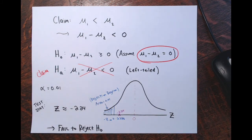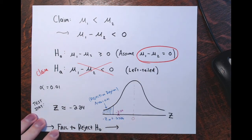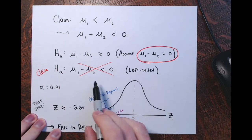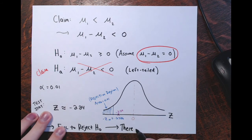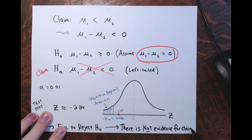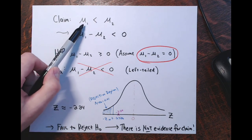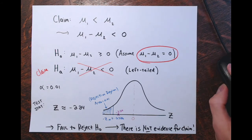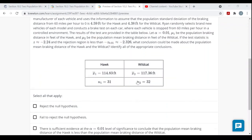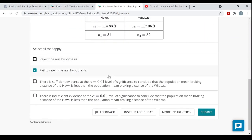Since we fail to reject the null hypothesis, the conclusion is that there is insufficient evidence to support the claim. Specifically, there is insufficient evidence at the 1% significance level to conclude that the population mean braking distance of the Hawk is less than the population mean braking distance of the Wildcat — we do not have enough evidence to support that claim.